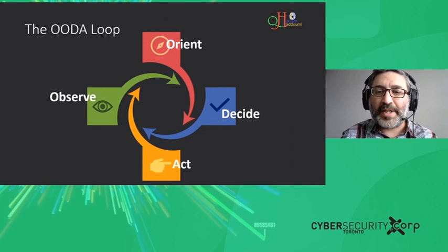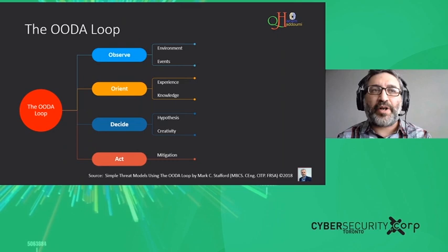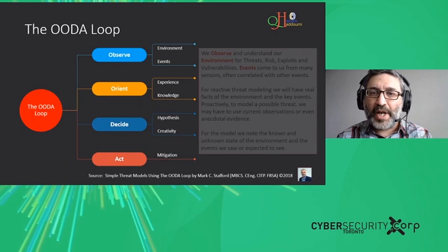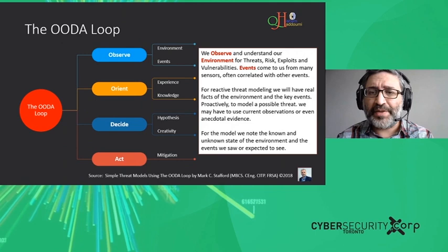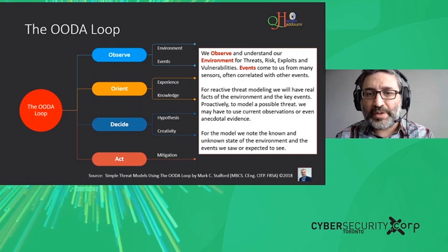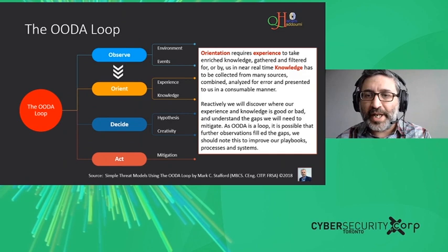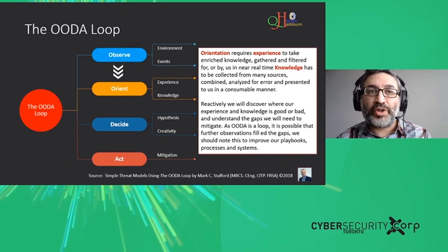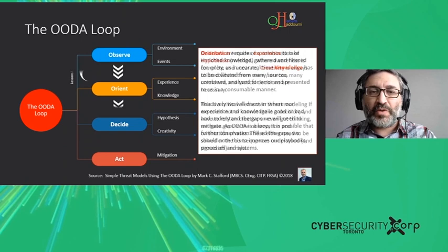It's a learning process that goes in loops for us to identify things and learn lessons from every incident or predicted incident. Observe: remain on the environment, collect and understand information, understand threats and events from many sensors correlated with other events. Then Orient: use experience and knowledge to recover from every incident or predict and stop future ones. Every lesson learned feeds from orientation back to observation.